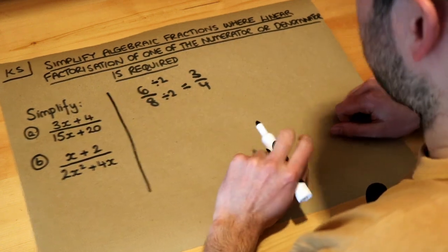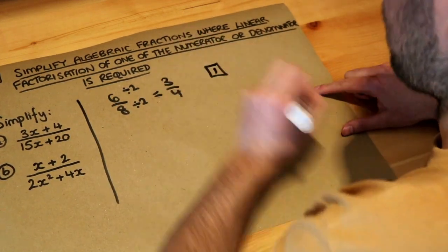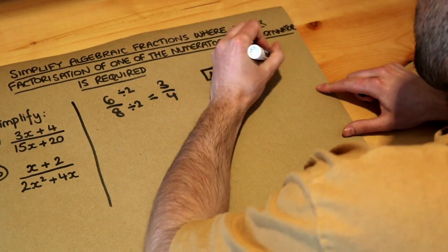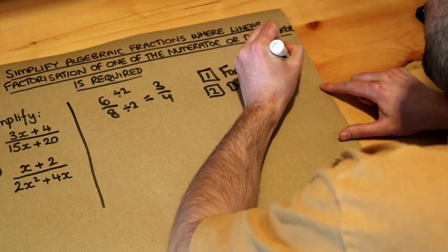And it's no different here, except we might have to factorize first. So the steps in general for simplifying algebraic fractions is to factorize where possible and then secondly to divide by any common factors.